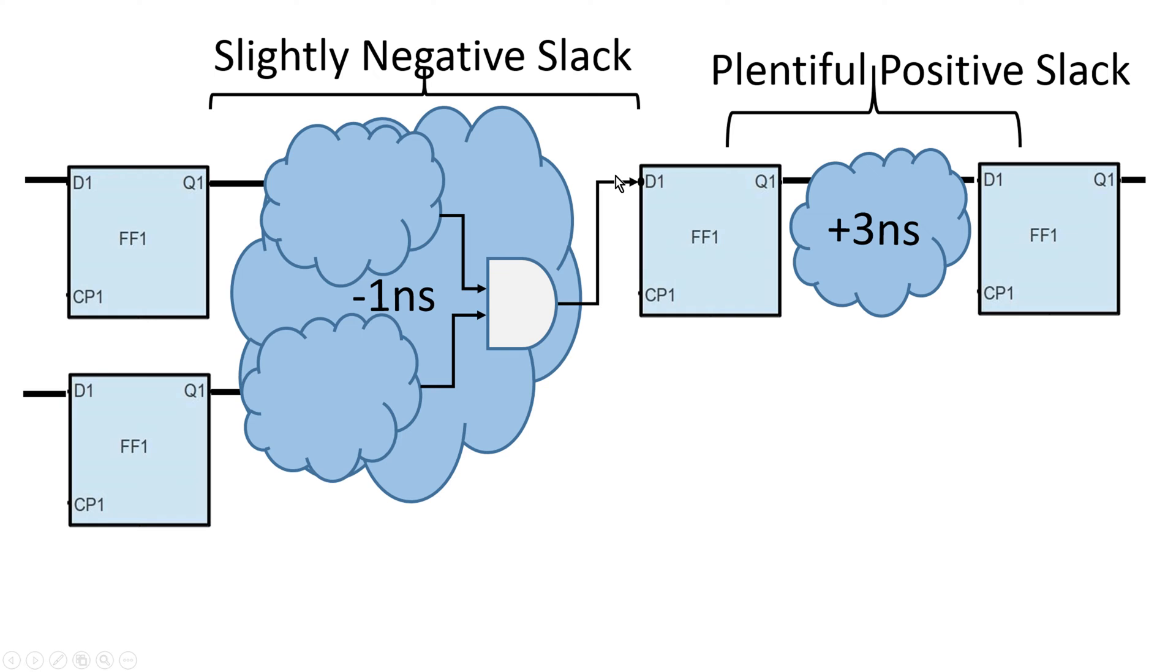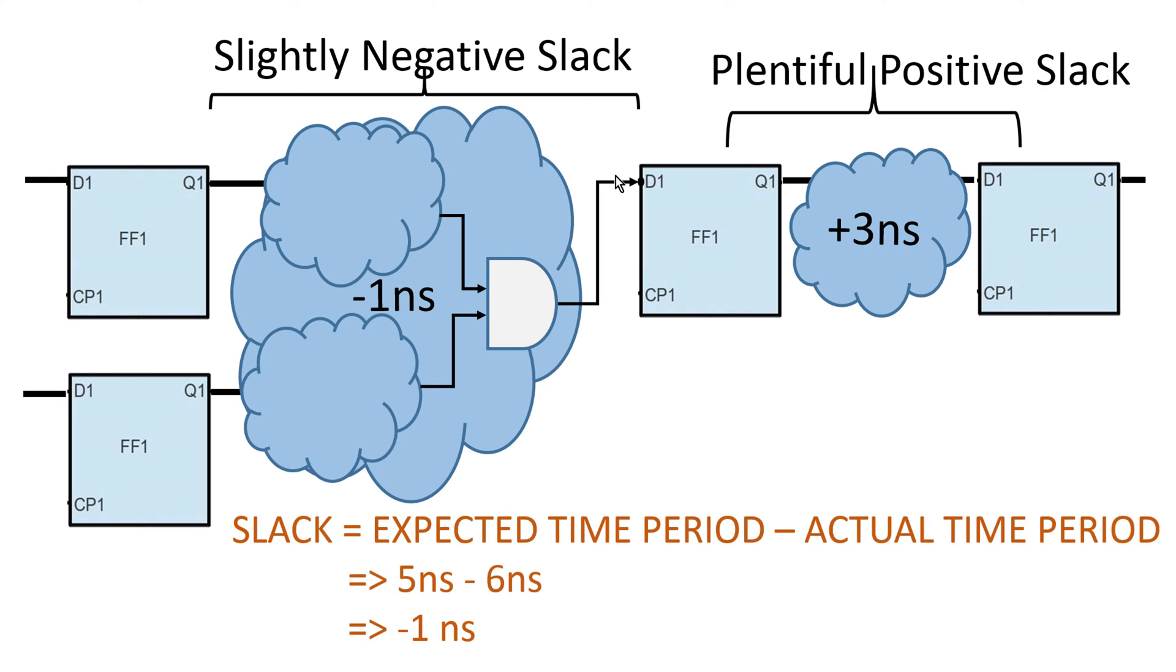As per static timing analysis, slack is equal to expected time period minus actual time period. For example, if we want our critical path to work at 5 nanosecond but it fails because of large combinational path delay and the minimum actual time period is 6 nanosecond. So 5 nanosecond minus 6 nanosecond is minus 1 nanosecond. So slack will be minus 1 nanosecond.